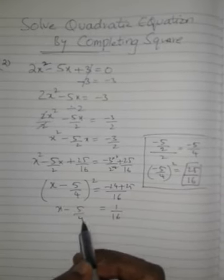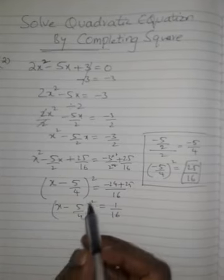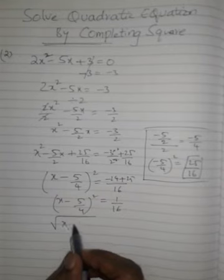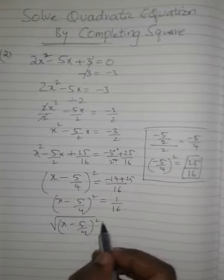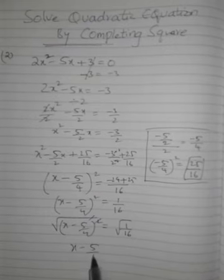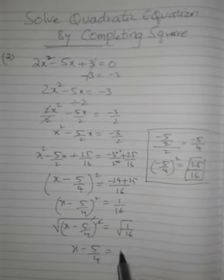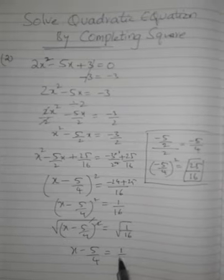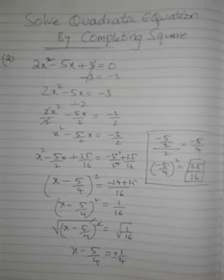x minus 5 by 4 whole square. Now I need to cancel this square. Apply square root. I'll have this one. 2N root gets cancelled. I'm left with x minus 5 by 4 square root of 1 over 16. They are perfect numbers. Perfect squares. So it will be 1 by 4 plus or minus.